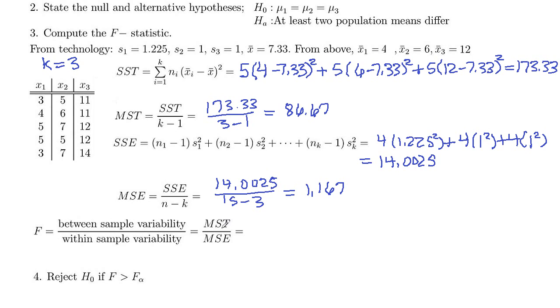And then the F statistic is mean square treatments divided by mean square error. So our mean square treatment right there, 86.67. That's our between-sample variability divided by mean square for errors, which is the 1.167. And that ratio is 74.27. That's our test statistic, so that is our F test.